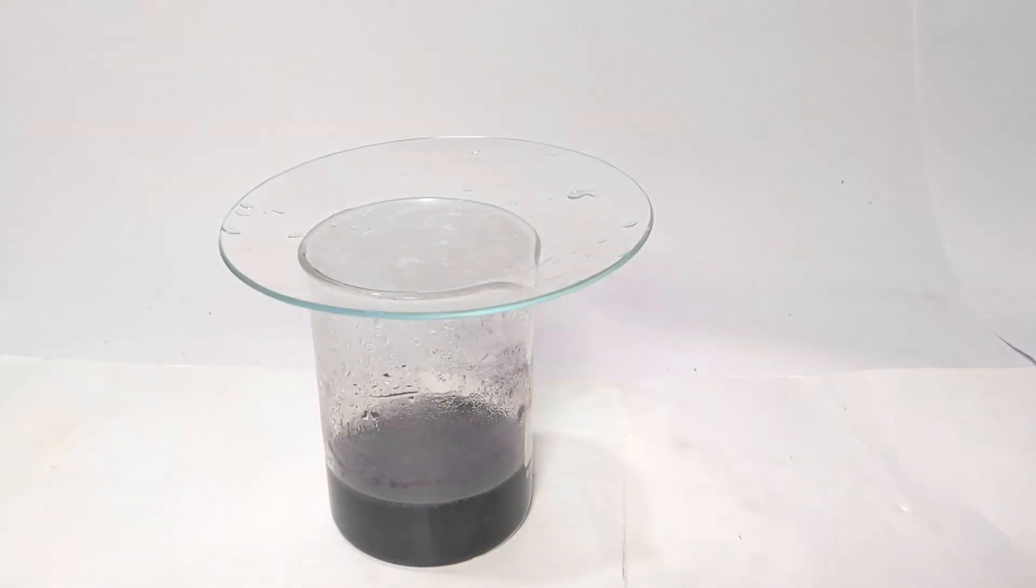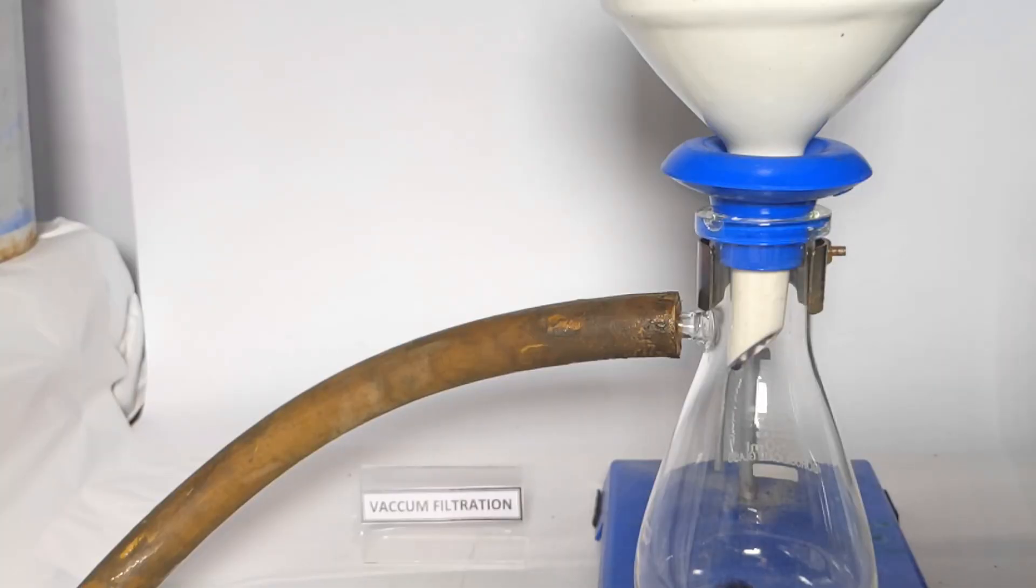By 90 minutes you can see the color of the solution has turned from green to purple and a solid has started to form. This is the product. The beaker was then cooled to room temperature. This will help crash out more of the product.